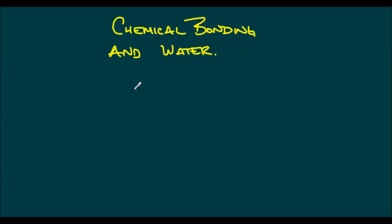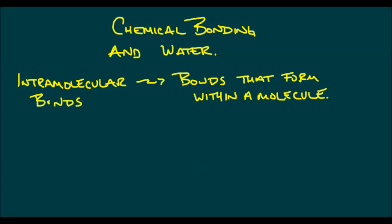And the first thing we're going to start to look at are what we call intramolecular bonds. Intramolecular bonds are bonds that form within a molecule. Now if you recall back to grade 10 chemistry, we had ionic bonds. Ionic bonds occurred when electrons were stolen from one atom and used by another. So we can say that electrons were transferred from one atom to another.